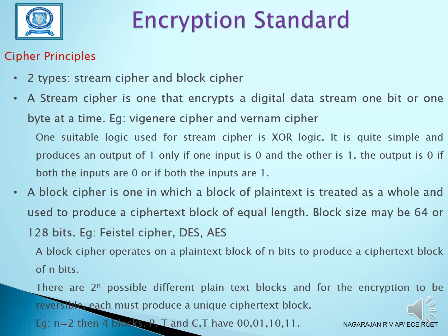There are 2^n possible different plain text blocks. For encryption to be reversible, each must produce a unique cipher text block. For example, if n is equal to 2, then there are 4 blocks, and the plaintext PT and ciphertext CT pairs are: 00, 01, 10, 11.